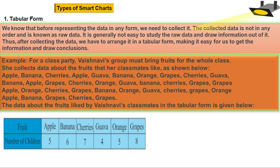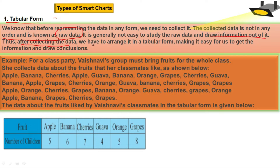Types of smart charts. One is tabular form. We know that before representing the data in any form, we need to collect it. The collected data is not in any order, which is known as raw data. It is generally not easy to study the raw data and draw information out of it. Thus, after collecting the data, we have to arrange it in a tabular form.